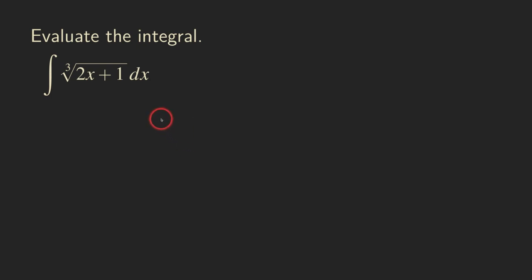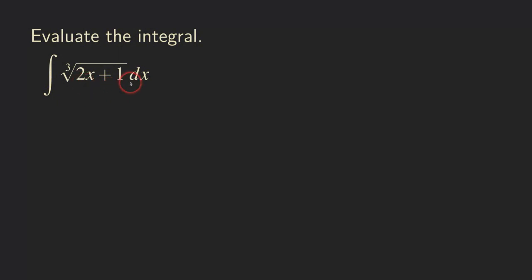Hello everyone. Let's look at this integral with the cube root right here. For this cube root, sometimes when we see this kind of problem, the first thing that will come to our mind would be to do a u-substitution. But for this integral here, we actually do not need to do a substitution. We can simply reverse the chain rule and come up with the antiderivative of the integrand. So how do we do that? Let's do the problem.